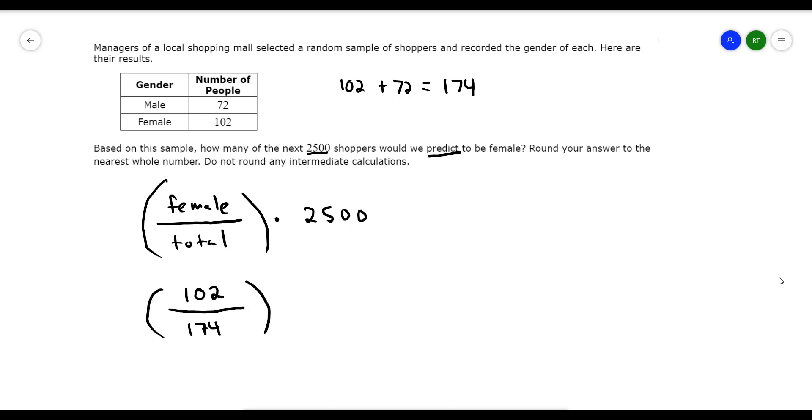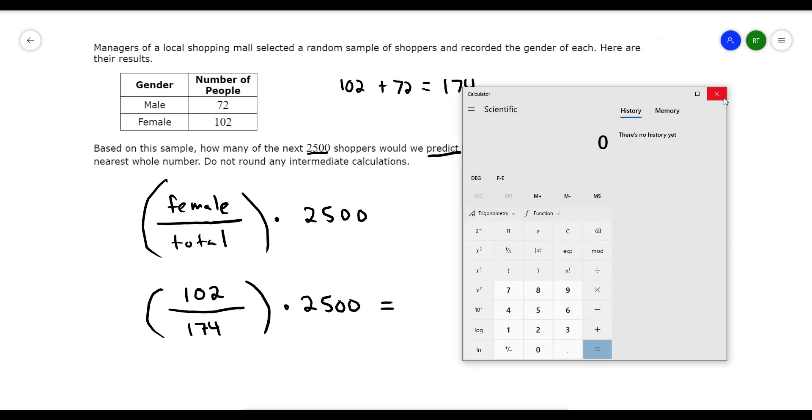Take that answer. And we're going to multiply it by 2,500. And our answer is going to be our prediction. So I'm going to do the parentheses first, 102 divided by 174. And I'm going to take that answer and multiply it with 2,500 and hit enter. And you can see I get the answer 1,465.51.